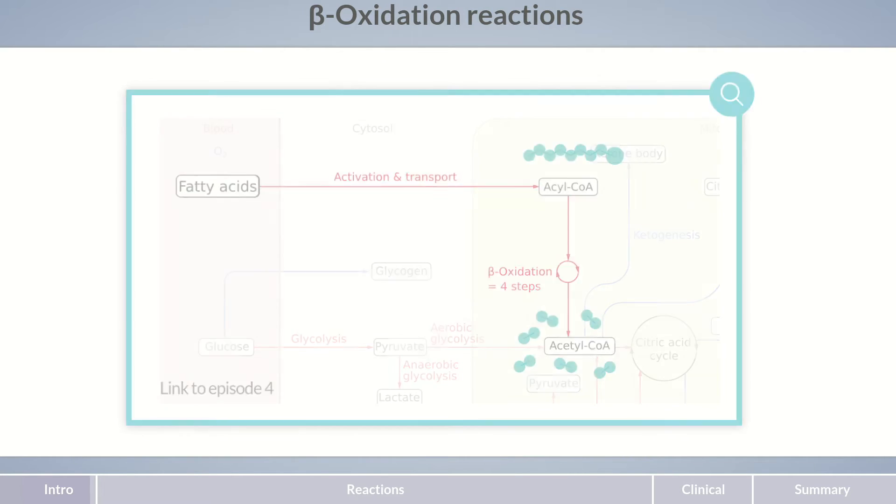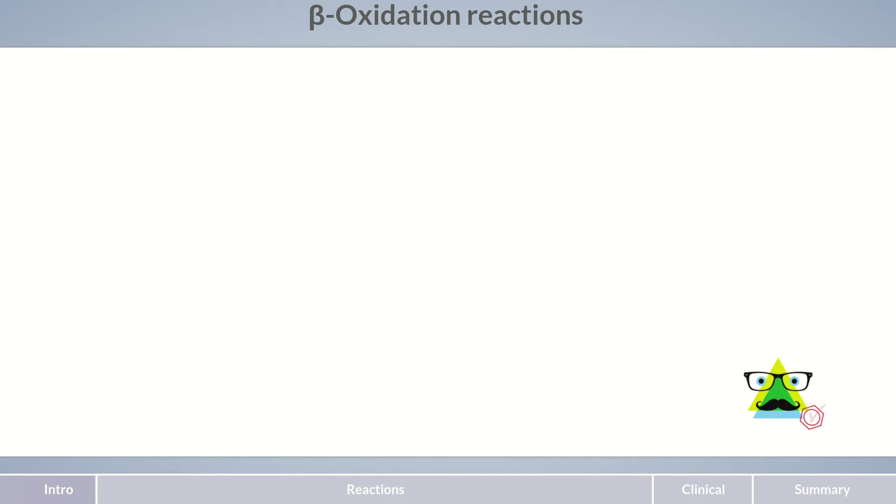If you'd like to see molecular structures with the names of the substances, then click on Dieter's red molecule. You can hide the structures at any time by clicking on the molecule again.